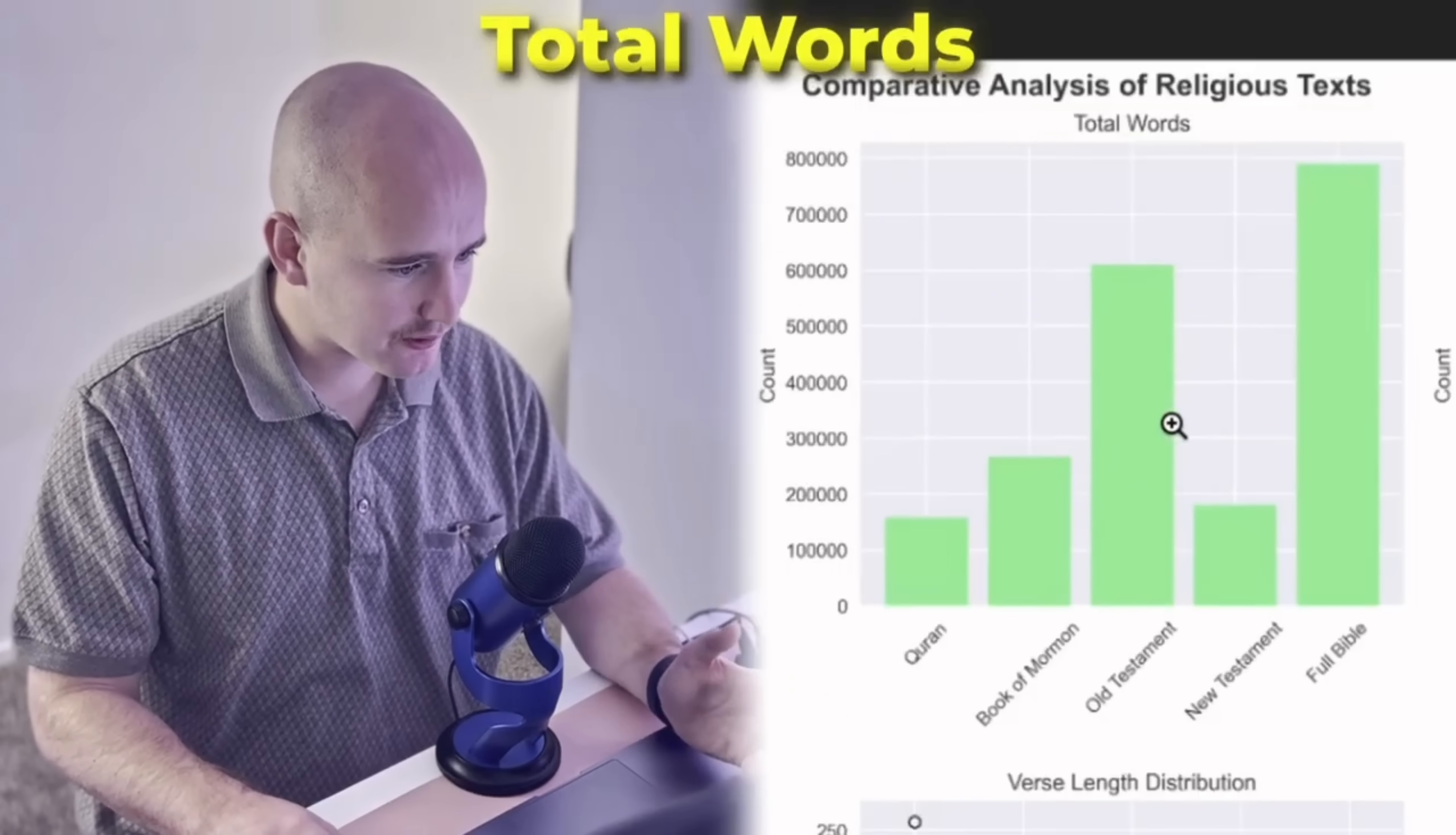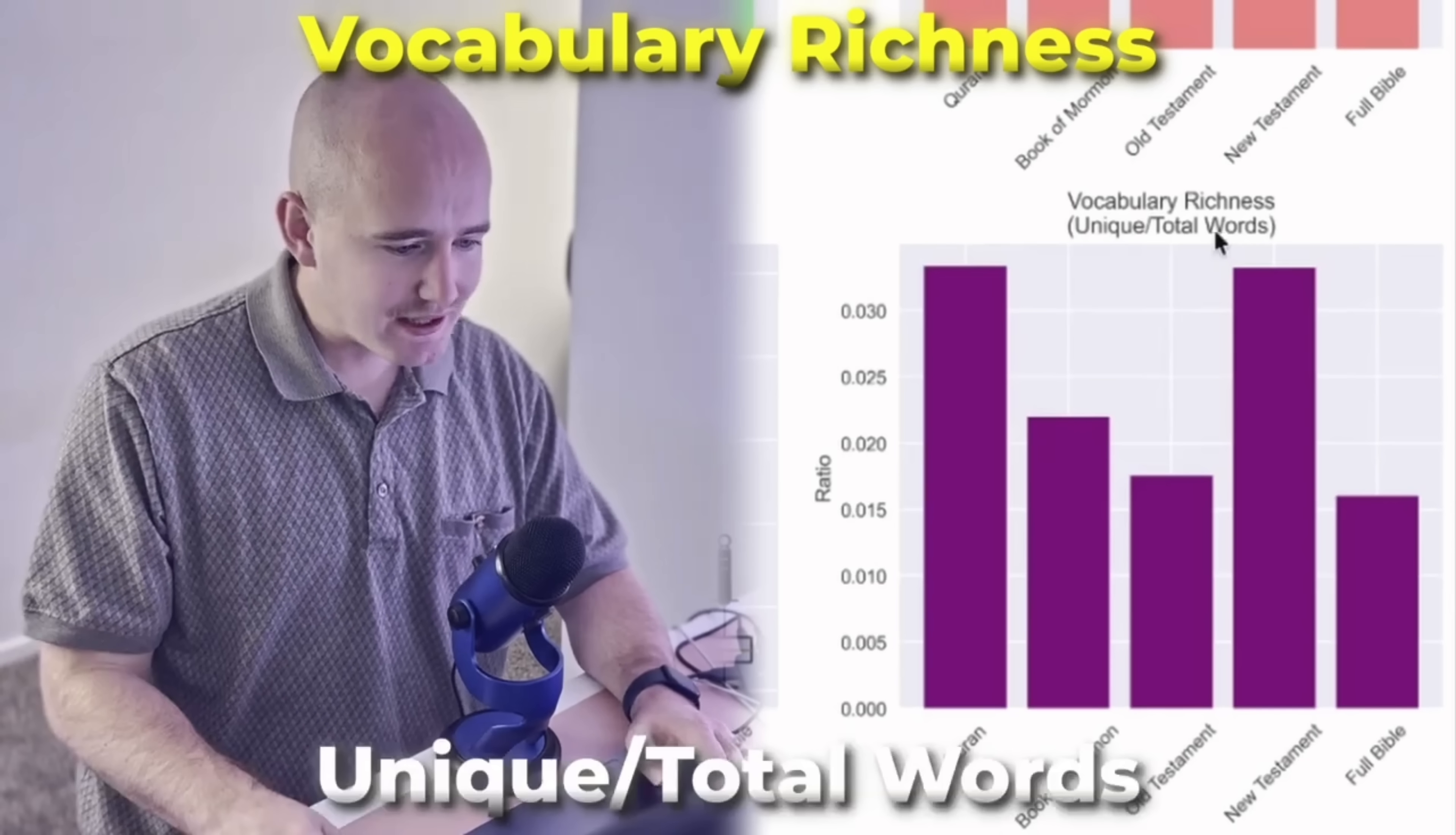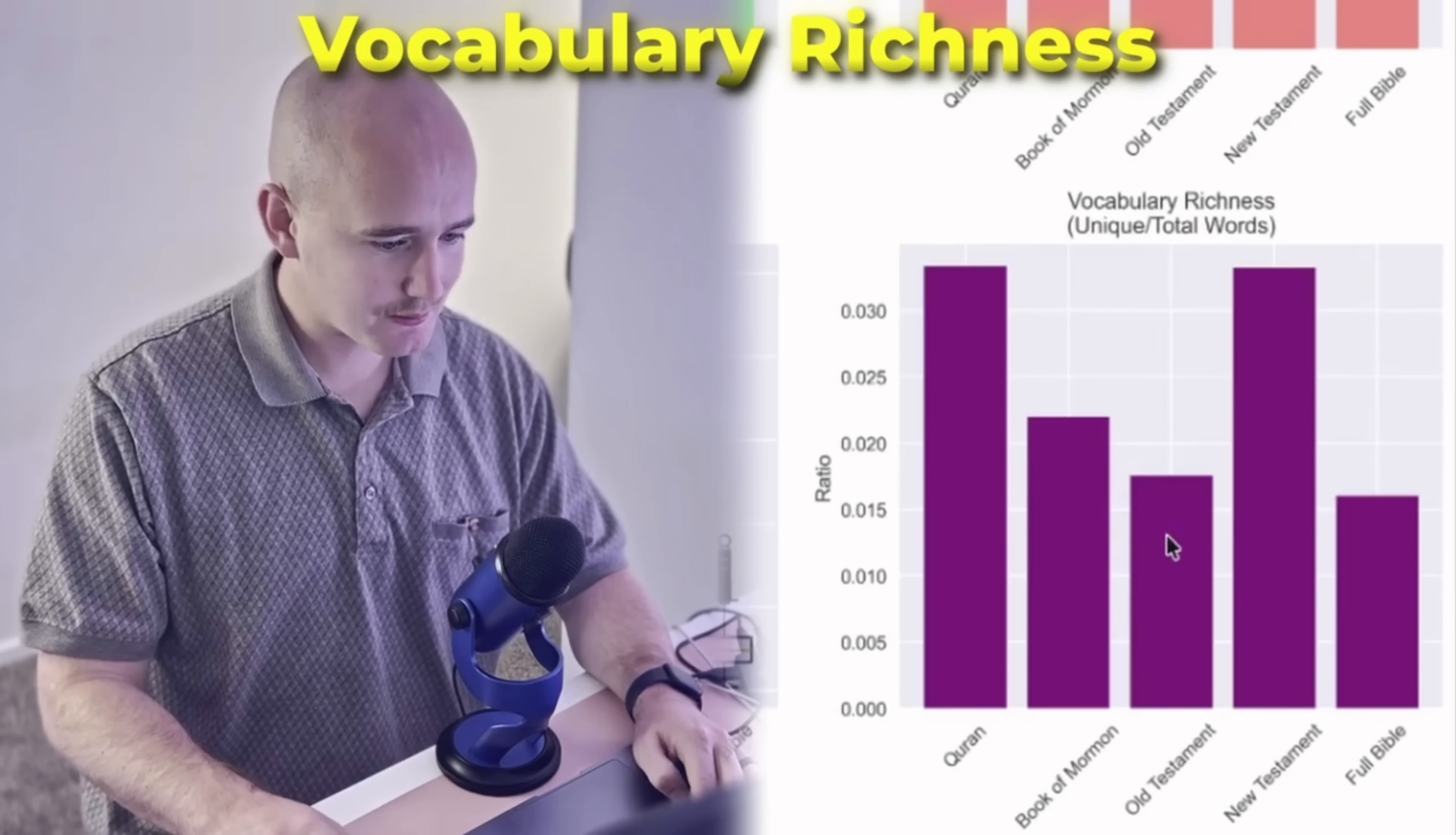And so let's look at this graph right here. We can see that the Old Testament has the most number of words, followed by the Book of Mormon, the New Testament, and then the Quran. And now this is interesting. If you look at this graph on the bottom right, I did a vocabulary richness score. So basically, you just take the unique number of words and divide it by the total number of words. And you can see that the Quran actually has the most rich vocabulary out of all the books, followed closely by the New Testament, and then the Book of Mormon and Old Testament.